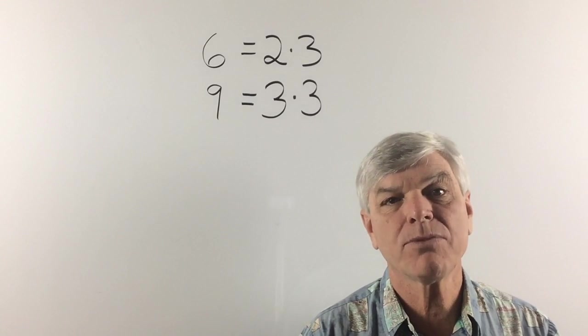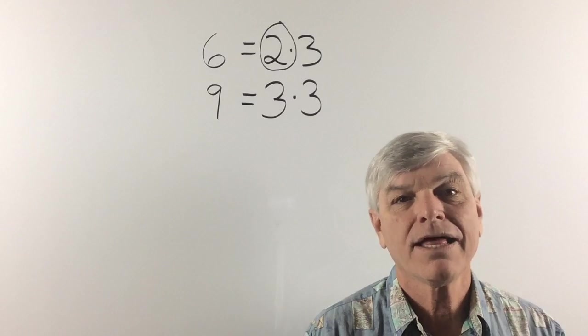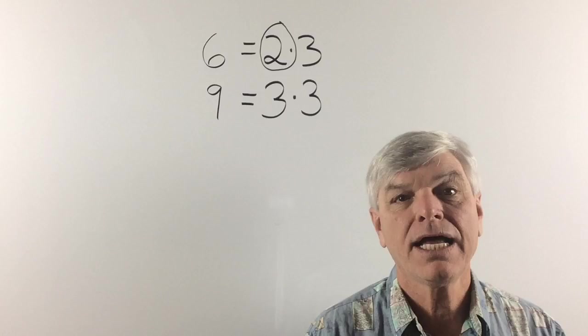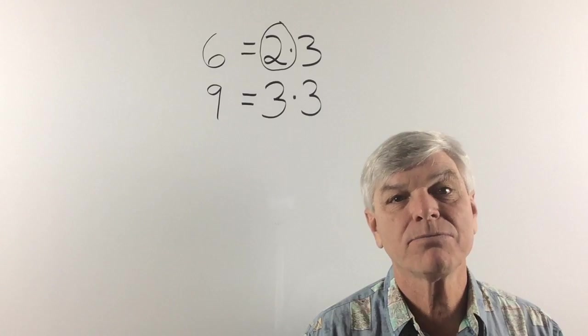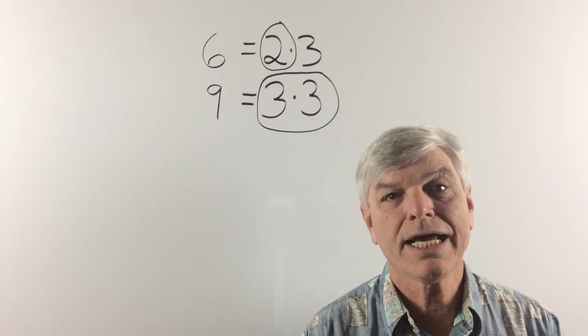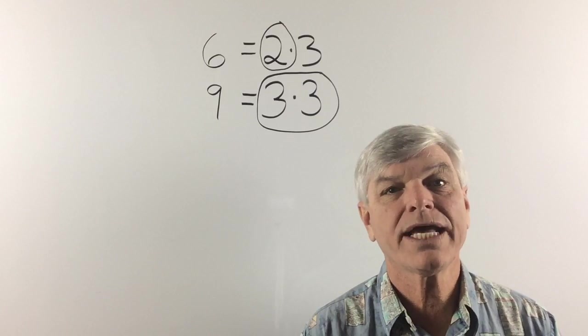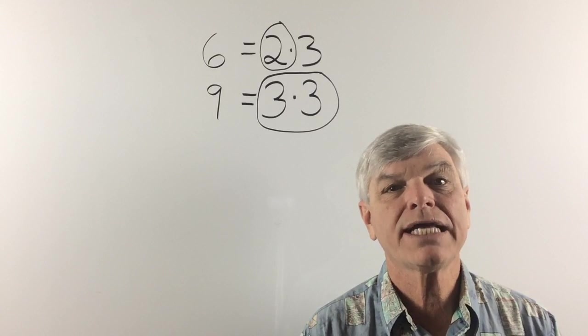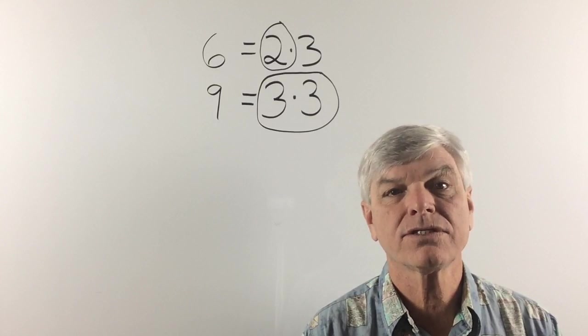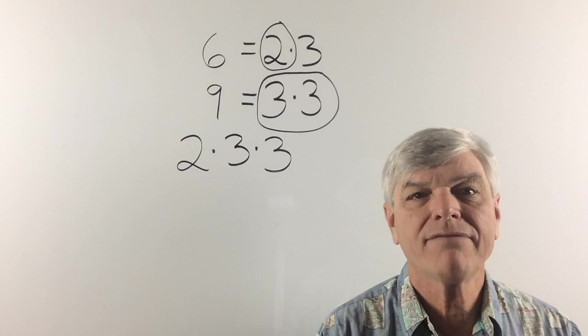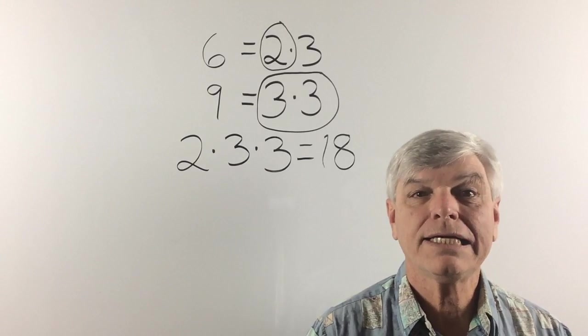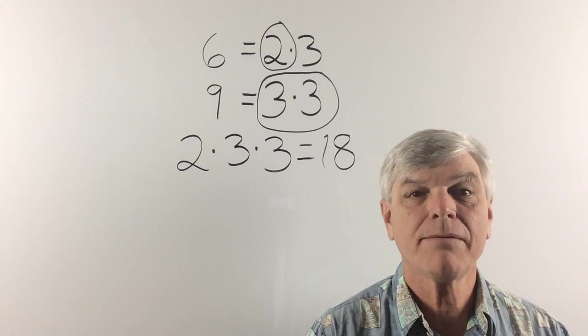Which number has the most number of 2's? That would be 6. 6 has one 2. 9 doesn't have any 2's. Now which number has the most number of 3's? That would be 9. 9 has two 3's. 6 only has one 3. So we are going to take the 3's from the 9. So let's take all the numbers that we have circled. And we have 2 times 3 times 3. Which equals 18. And that is going to be our lowest common denominator.